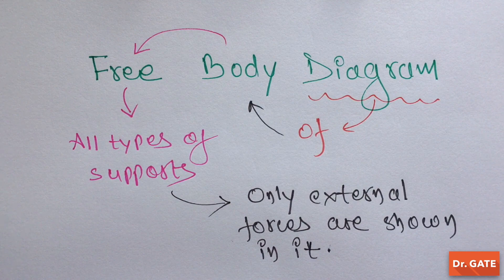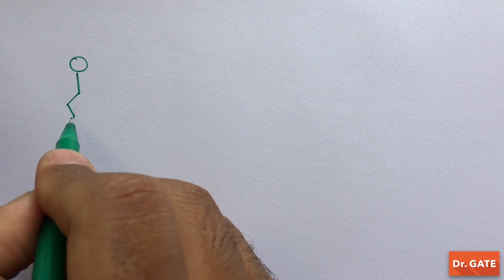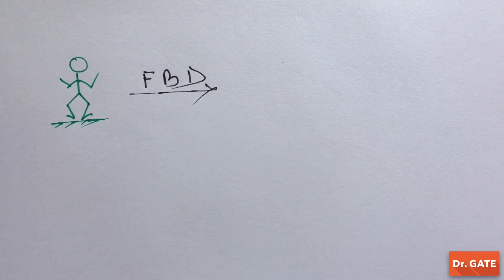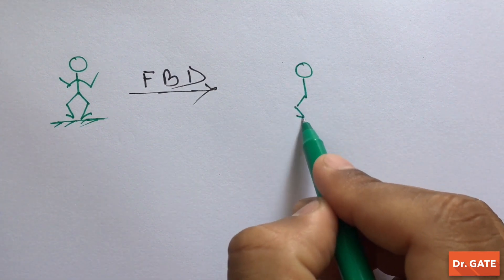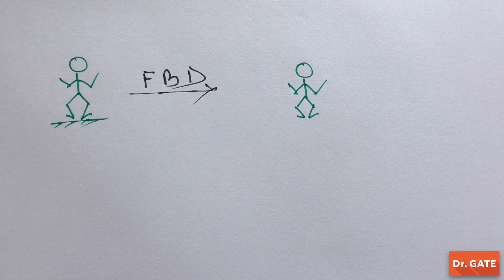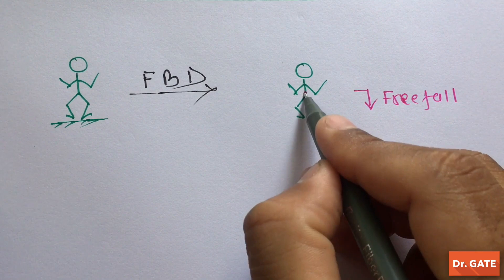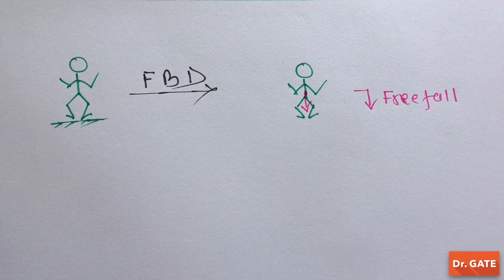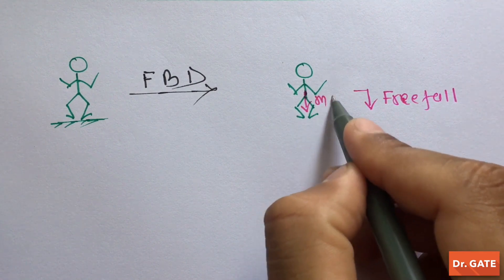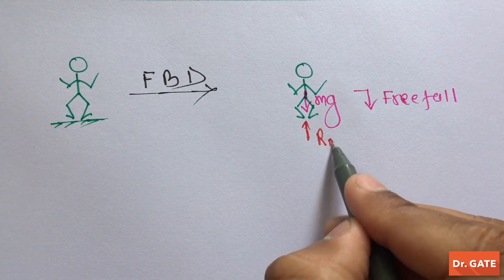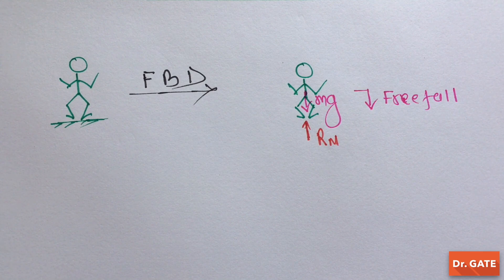Let's take an example for better understanding. Suppose you are standing on a ground and you want to draw your free body diagram. Then you have to draw yourself without any support. Then you will be in a free fall, because Earth will pull you towards its center with a force of Mg. But in actual you are not in free fall, because the ground is applying an equal and opposite reaction on you. So this is your free body diagram.